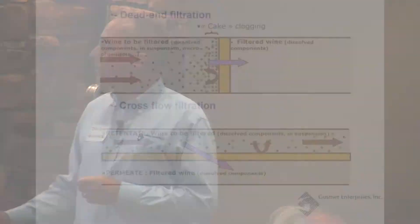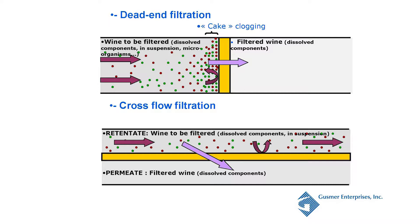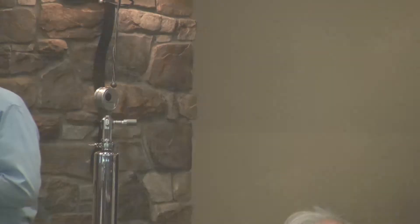This top section is called dead-end filtration. Anything that Nate, Bill, or Rob talked about this morning is really categorized as dead-end filtration. It doesn't mean it's a bad thing, but what it's doing is building up a filter cake — we're running the product to be filtered, which is wine, at a 90-degree angle against your filter element. That's true whether it's DE, filter sheets, a membrane, or any other type of filter. As Rob talked about, this cake is actually getting tighter and you're getting cleaner filtrate coming off the filter.